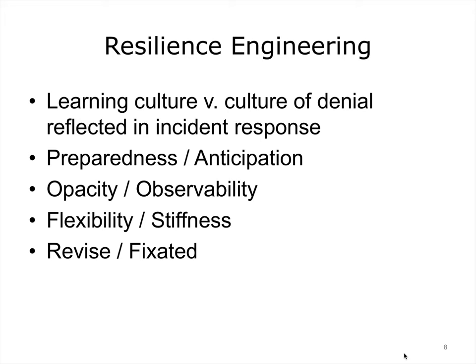Preparedness and anticipation asks: is the organization proactive in picking up on evidence of developing problems versus only reacting after problems become significant? Opacity and observability asks: does the organization monitor safety boundaries and recognize how close it is to the edge in terms of degraded defenses? Also, to what extent is information about safety concerns widely distributed throughout the organization versus closely held by a few? Flexibility and stiffness asks how the organization adapts to change. Revise versus fixated asks how the organization updates its model of vulnerabilities and effectiveness of countermeasures over time.